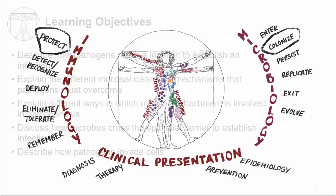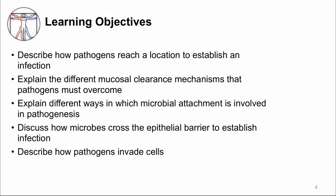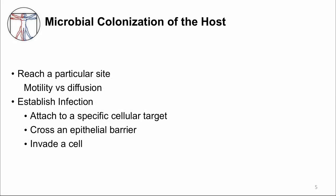The learning objectives are to describe how pathogens reach a location to establish an infection, to explain the different mucosal clearance mechanisms that pathogens must overcome, to explain different ways in which microbial attachment is involved in pathogenesis, to discuss how microbes cross the epithelial barrier to establish infection, and to describe how pathogens invade cells. I will first discuss how microbes reach a particular location, and then I'll discuss how attachment, crossing the epithelial barrier, and invading cells are involved in establishing infection.